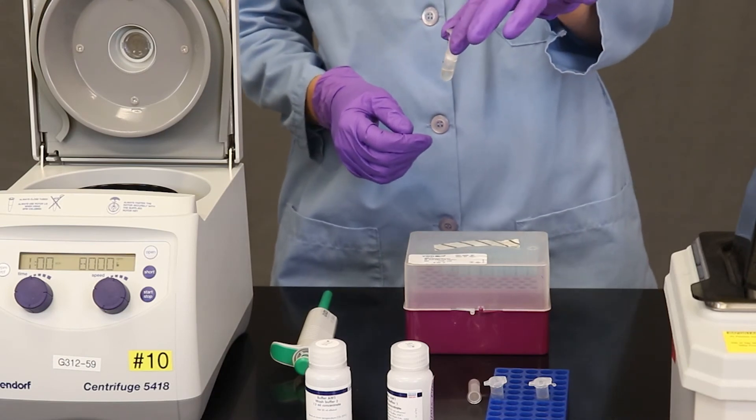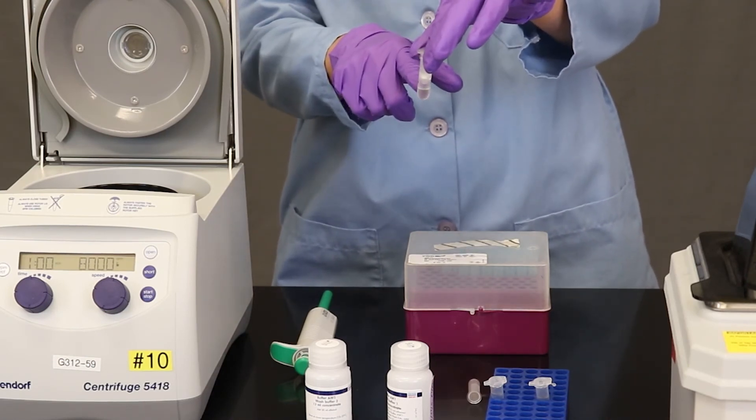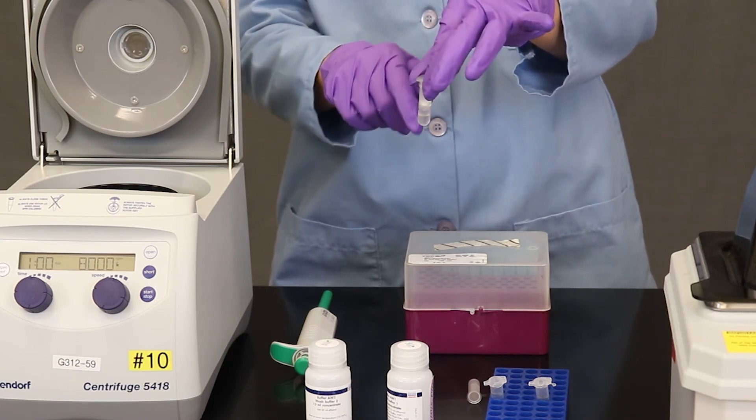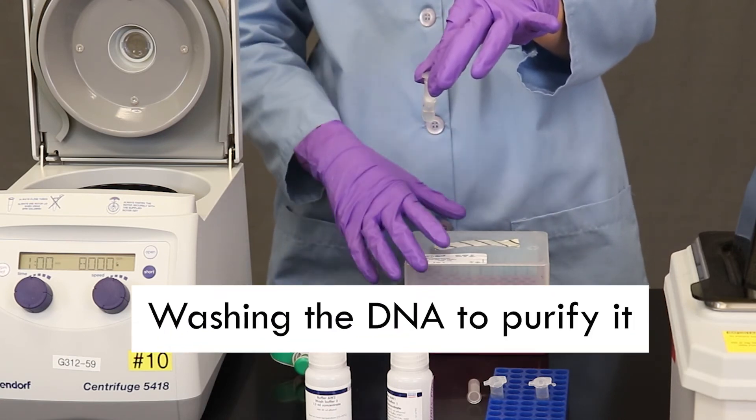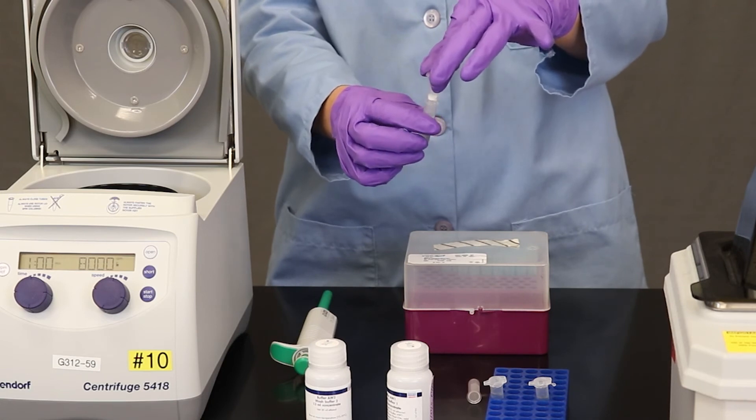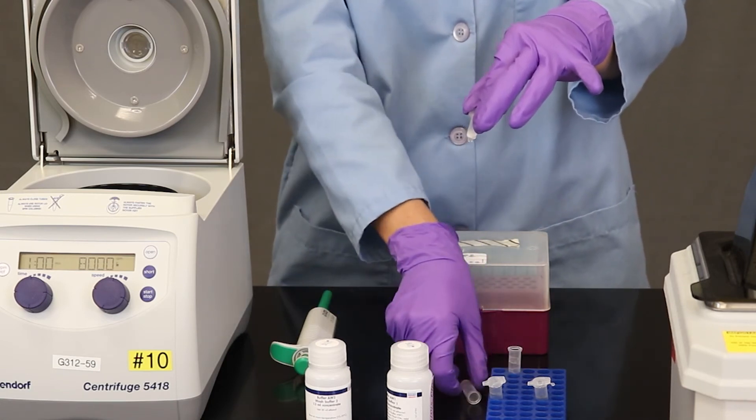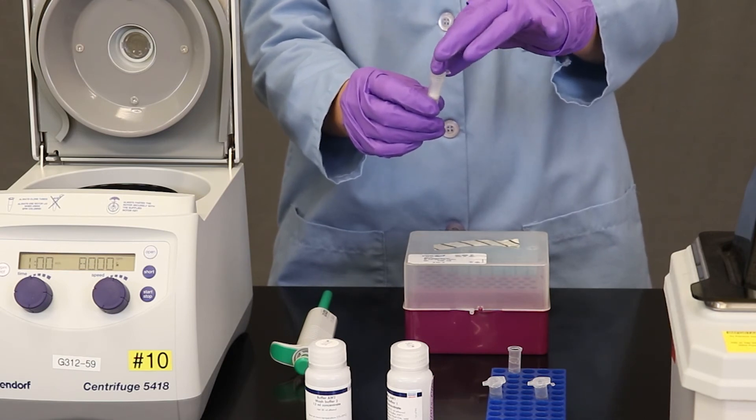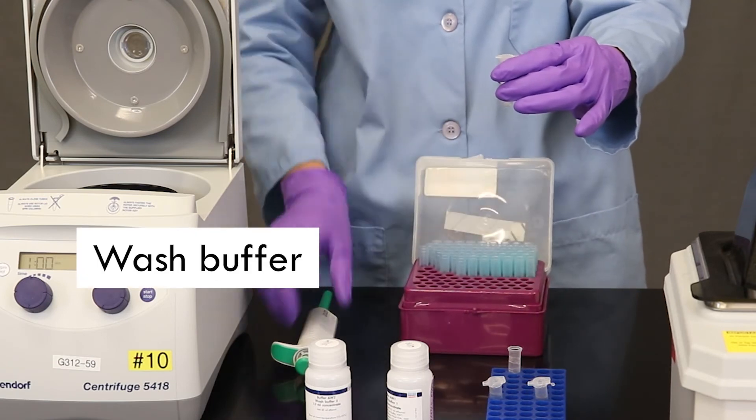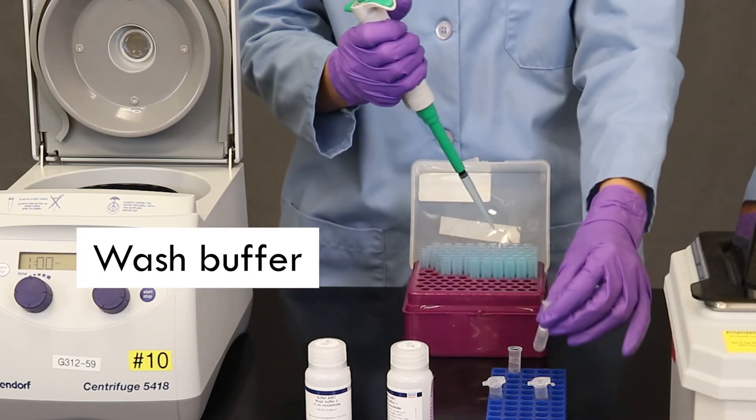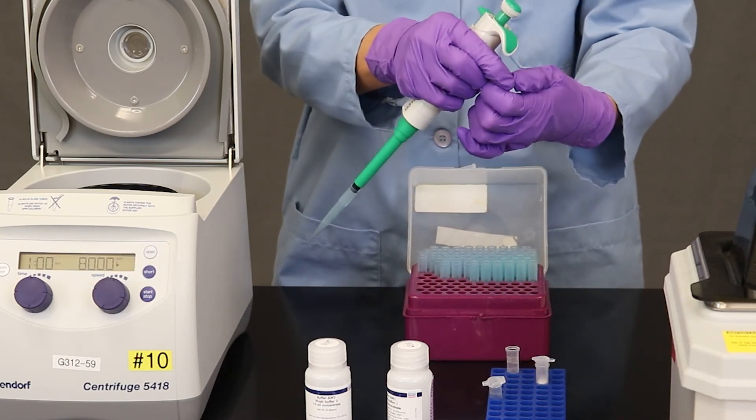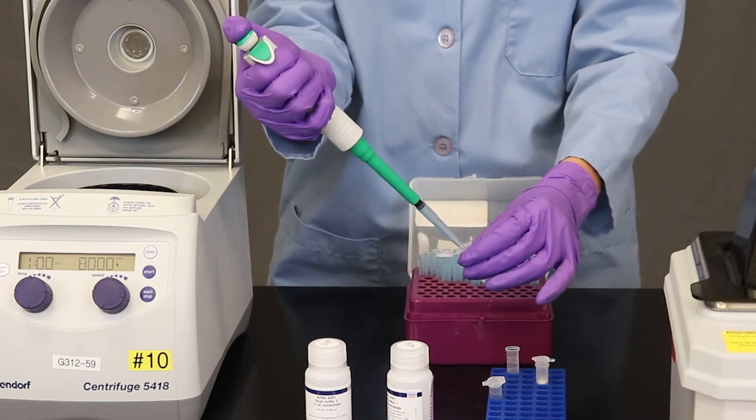If you look in this mini column, what you can see is there's some solution at the bottom that's passed through the filter. And the DNA is now in the filter. So the next steps involve washing the DNA to purify it in the filter. So the first thing I'm going to do is I'm going to remove the bottom of this mini column. And I'm going to put a new bottom part on. And now I'm going to add 500 microliters of wash buffer. And this is just to remove impurities from the DNA.